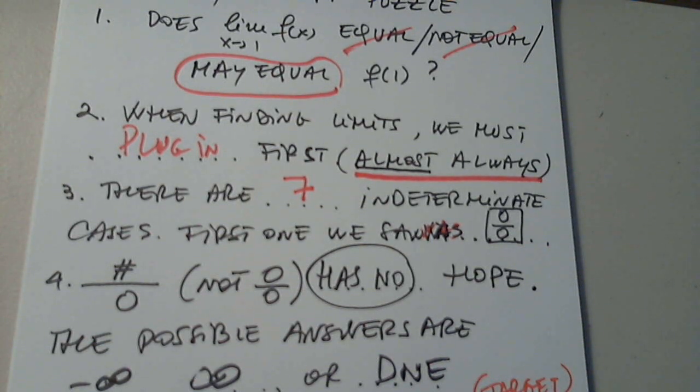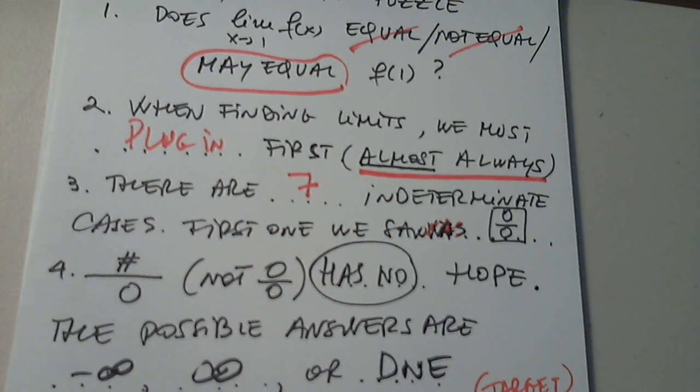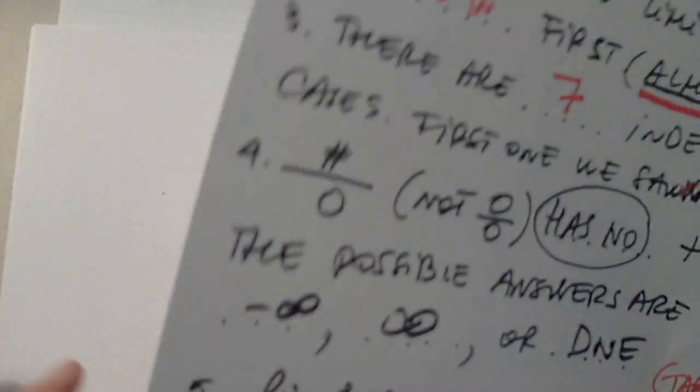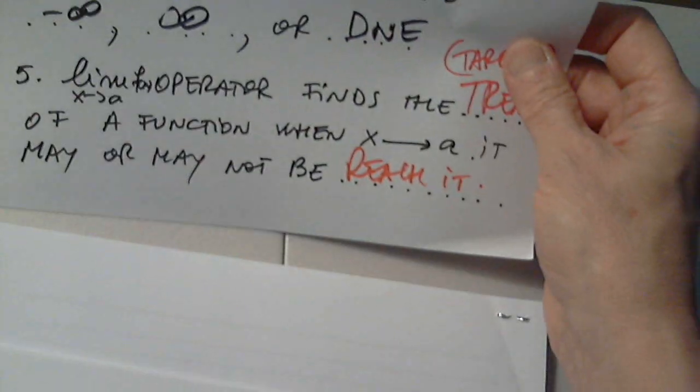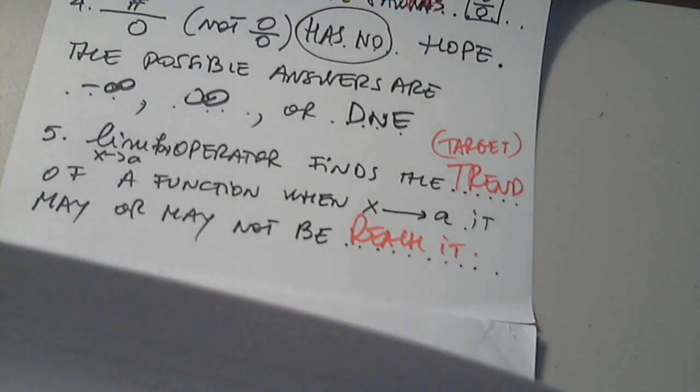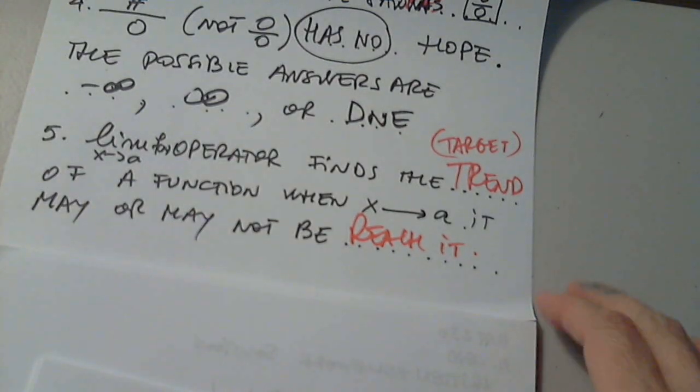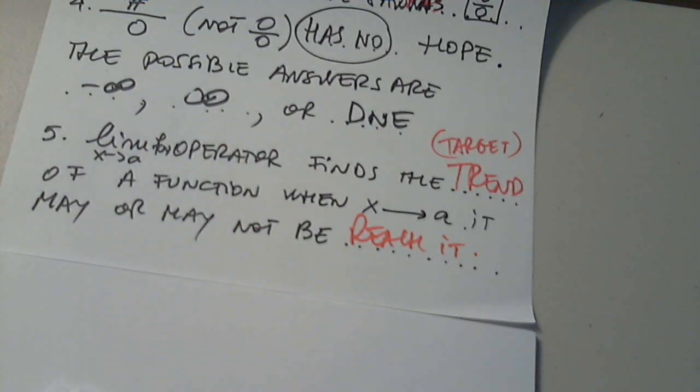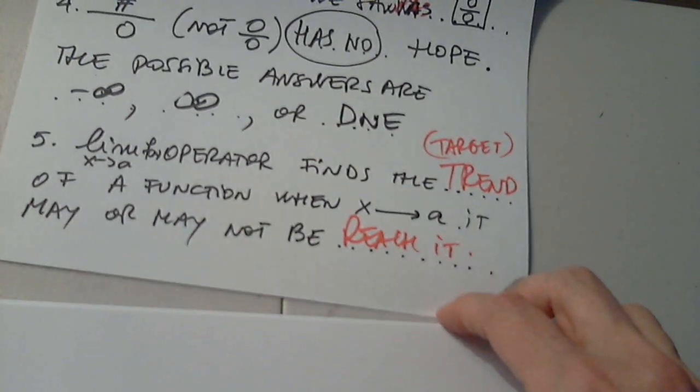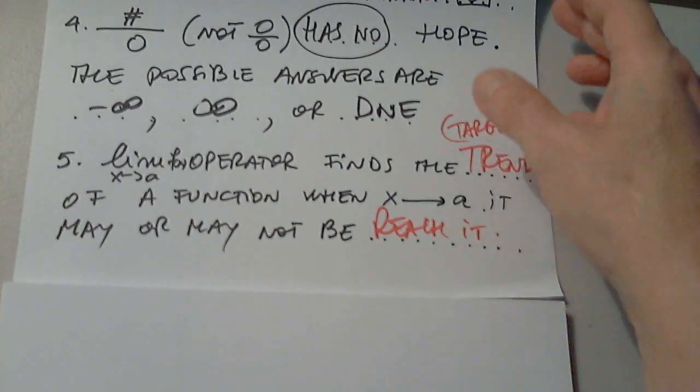So when we say the limit is five, it doesn't mean that the function will get to five. It means that's the target. That's what the function is telling us. Okay. What is this here? What's going on? What's all this? I don't need these. Clean. Okay. Clean. I'm ready now. Any question, please? Let's start.